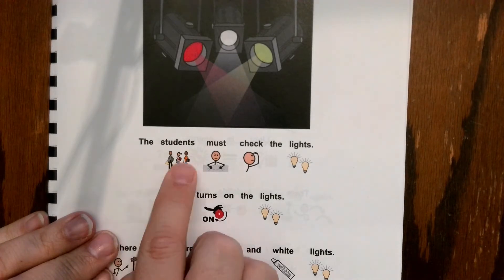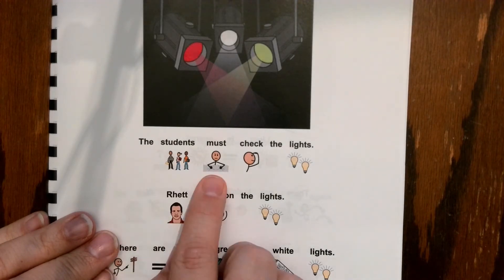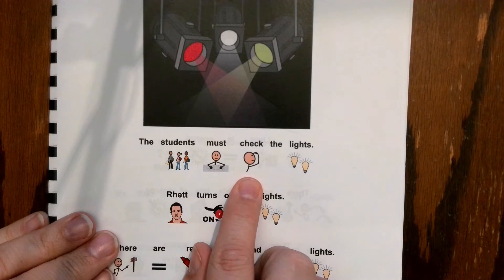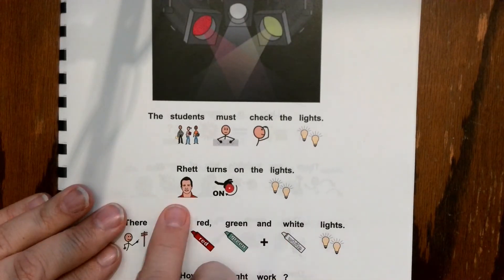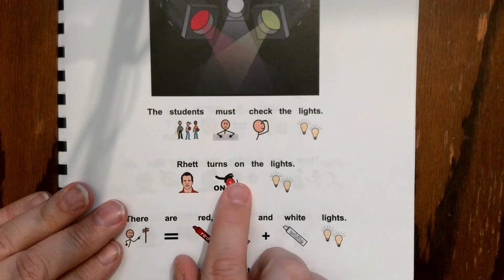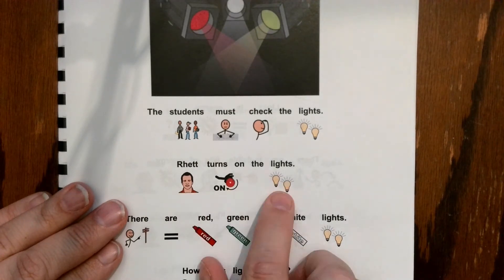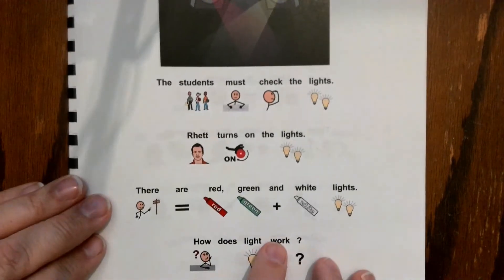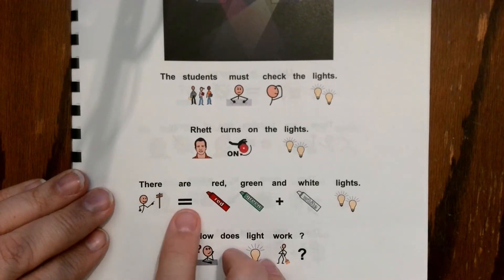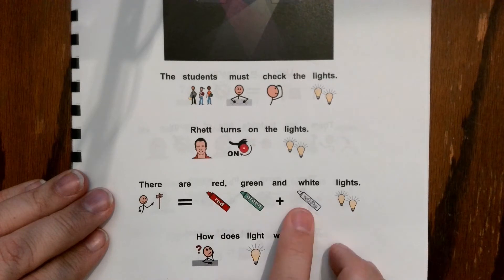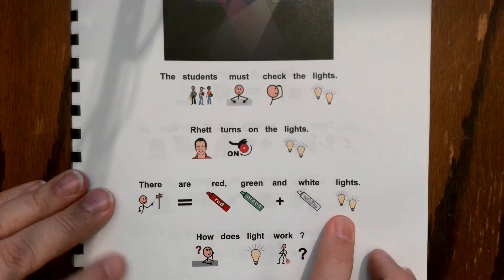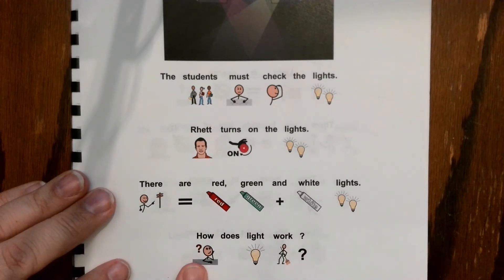The students must check the lights. Rhett turns on the lights. There are red, green, and white lights. How does light work?